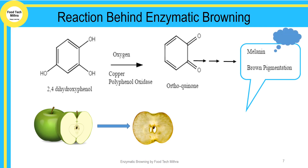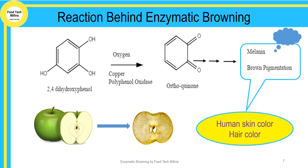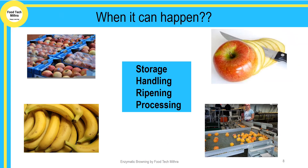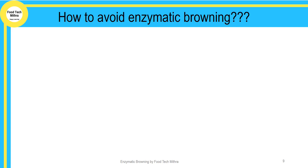Melanin is the same pigment responsible for our skin color and hair color. Enzymatic browning can happen during storage, handling, ripening, and processing. Now let us see how enzymatic browning can be prevented — there are a few methods by which formation of brown pigmentation can be avoided.